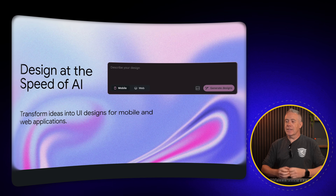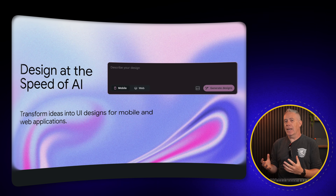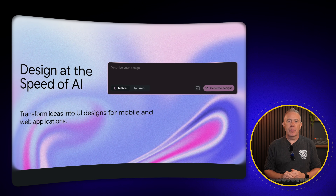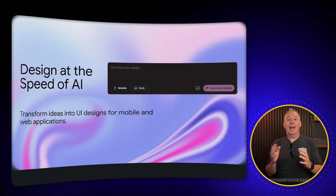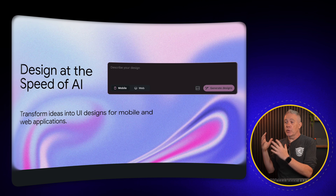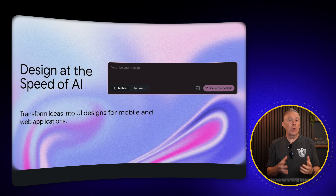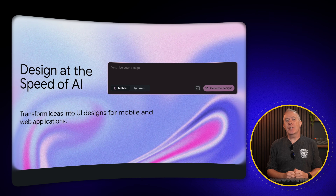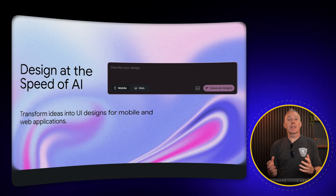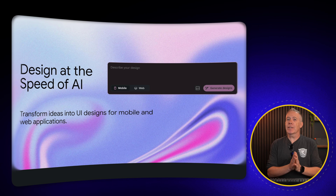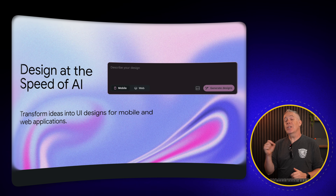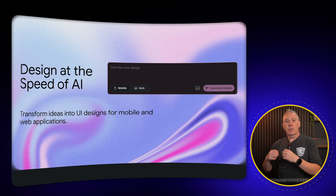Google Stitch is one of the latest AI tools available to designers. If you want to create UI designs for mobile and web applications, it promises to convert or create those for you. There are a couple of cool tricks worth mentioning. In this video, I want to go over how to use it.